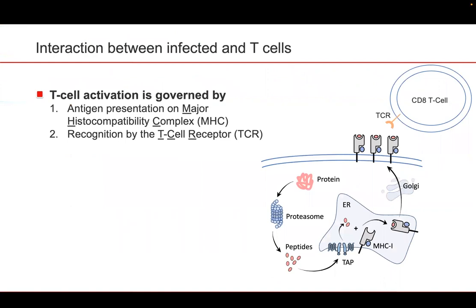I would like to introduce you to the main steps of the interaction between infected cells and T-cells. T-cell activation is governed by two main steps. The antigen presentation pathway, where the protein gets degraded by the proteasome into peptides. These peptides get then transported into the ER via TAP, some of which bind to the MHC molecules — the most selective step in this process — and then the peptide-MHC complex is presented at the cell surface for TCR recognition.